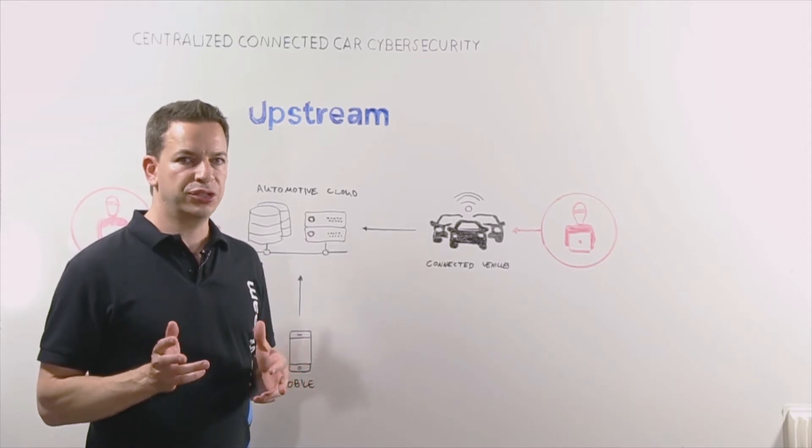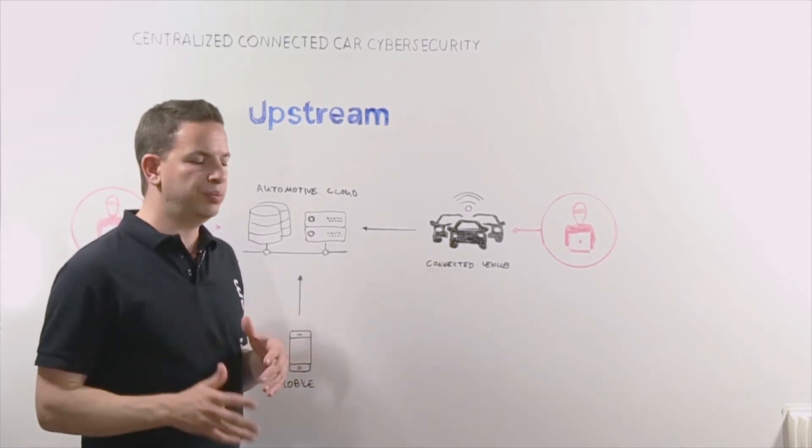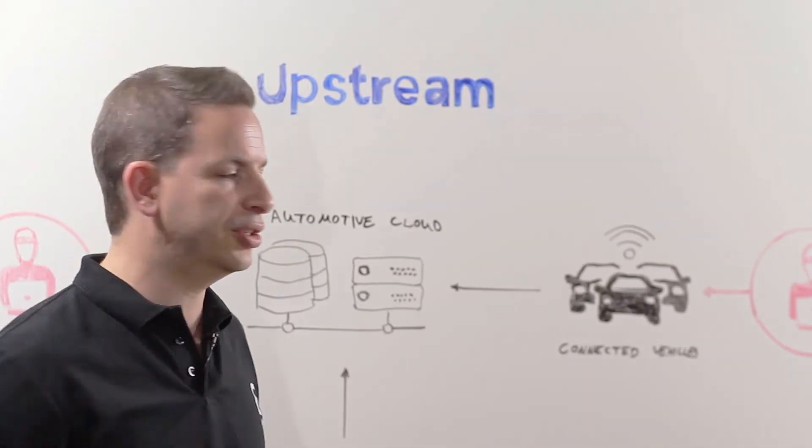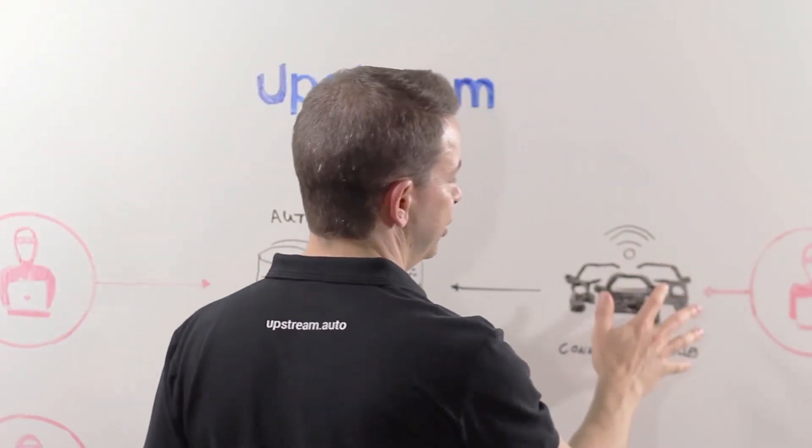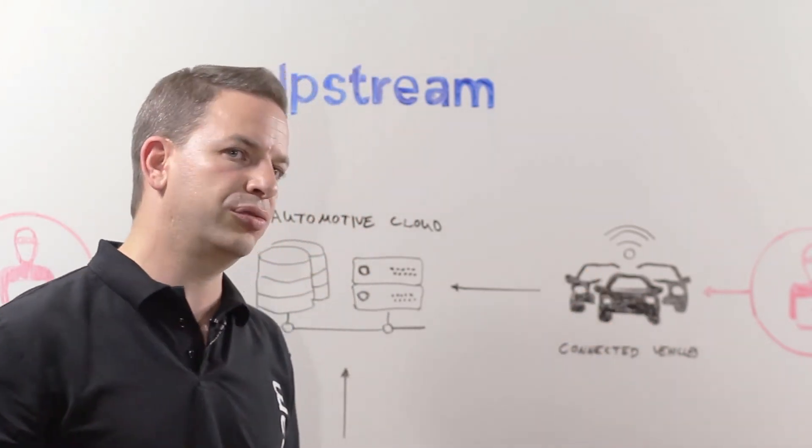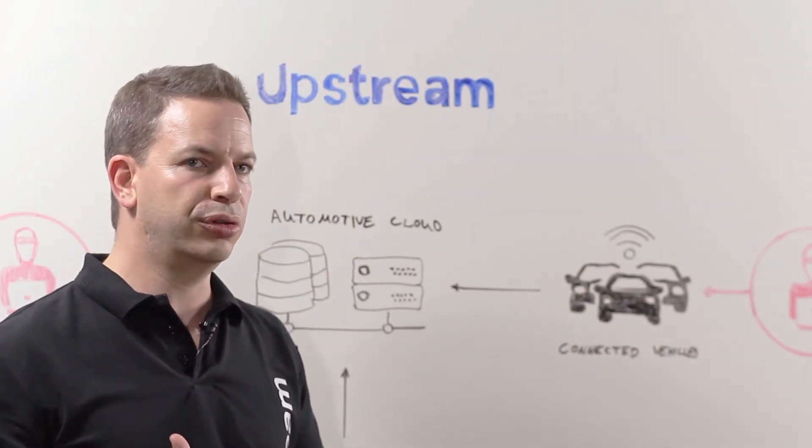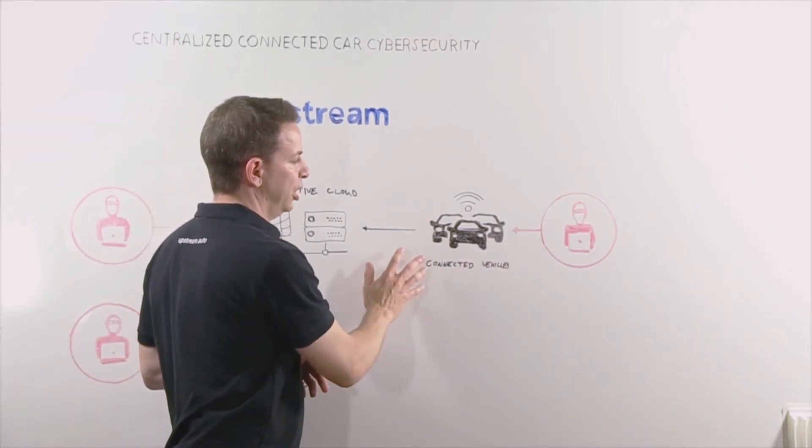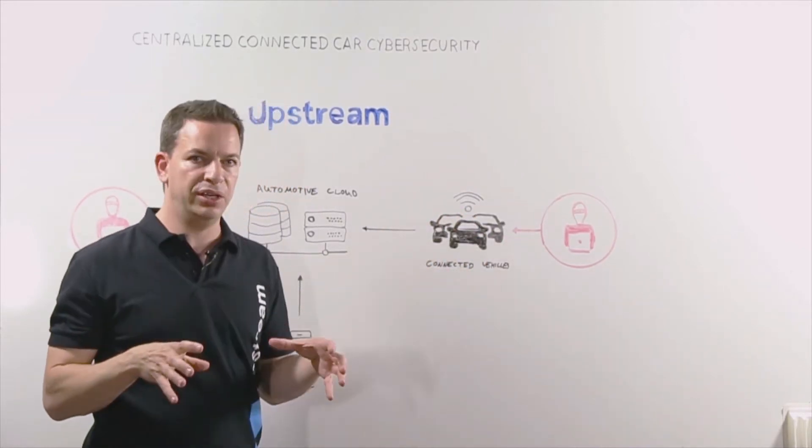Now that we understand the infrastructure, let's look at how a hacker would try to penetrate this connected vehicle service. The most obvious attack vector is what we call near-field attack, when a hacker can physically compromise the car either through OBD2, through Bluetooth or Wi-Fi. Near-field attacks in most cases are confined to the impact they can create as they're isolated to a single vehicle.